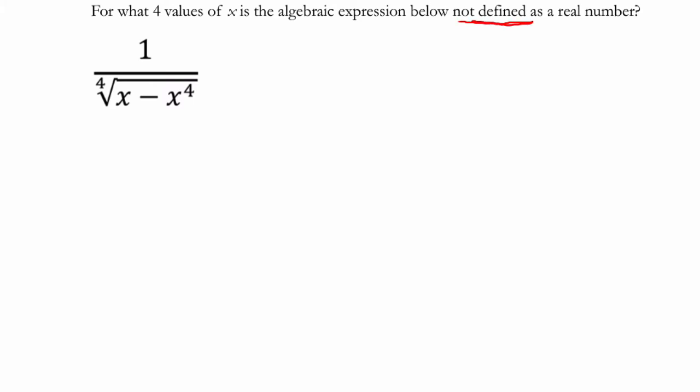I'm really looking for the cases where this is not defined. If we had also talked about when it's a complex number and not a real number, then that might be a different question. But I was trying to say, when is this undefined? In other words, when are we dividing by 0? When does this equal 0 down here?